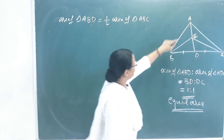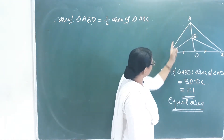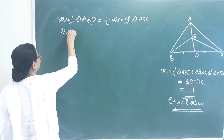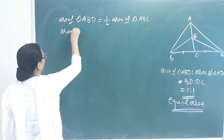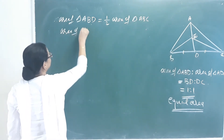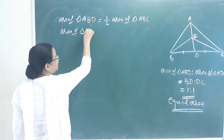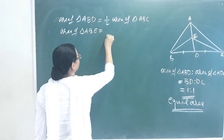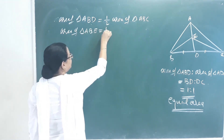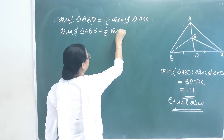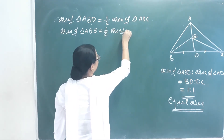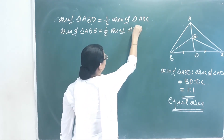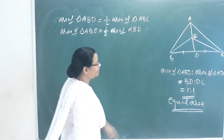Area of triangle ABE is equal to one half of area of triangle ABD, because E is the midpoint of AD.